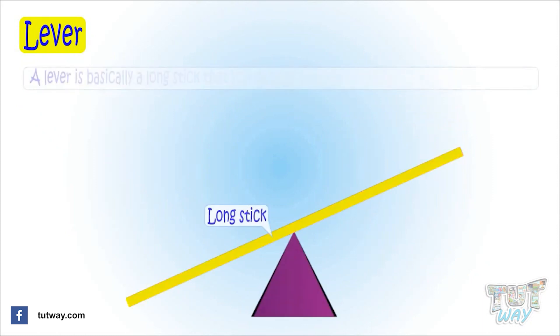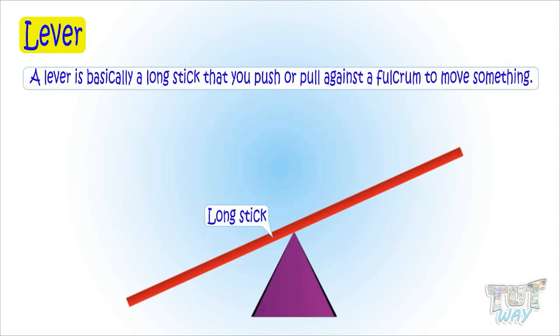A lever is basically a long stick that you push or pull from one side against a fulcrum in order to move something on the other end of the bar.